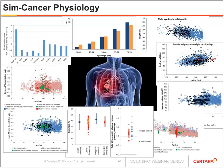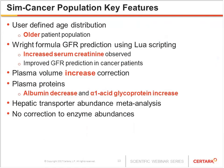Key features of the cancer population include: user-defined age distribution to describe the older population; the Wright formula for GFR prediction via Lewis scripting, related to the increase in creatinine observed; changes in plasma volume and plasma proteins; and inclusion of hepatic transporter abundances. Regarding enzyme abundances, the data found was conflicting in terms of the effect of cancer. Performance verification for CYP substrates will demonstrate why we decided not to correct enzyme abundances.